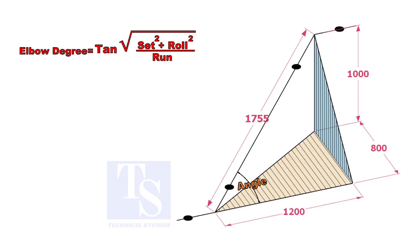The formula is the root of the set and the roll is divided by run into tan.